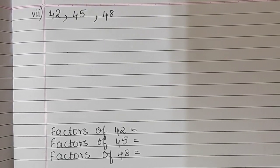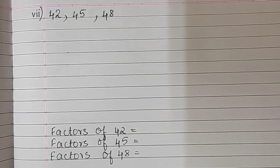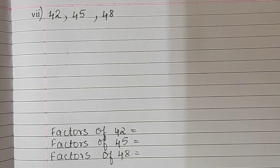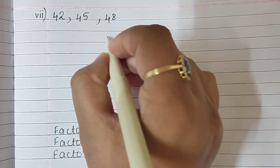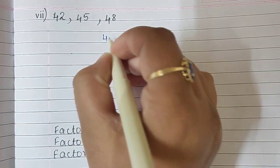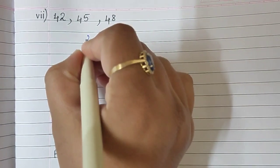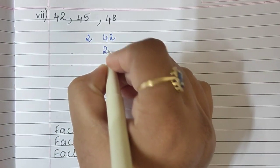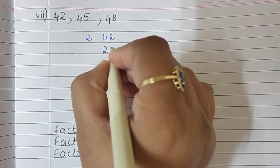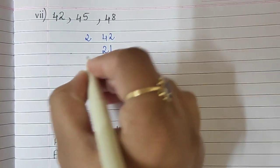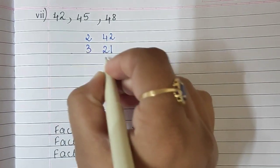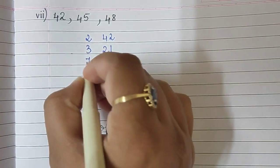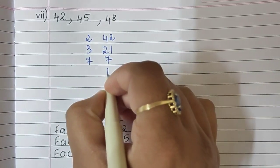Next is sum number 7. We will find the factors of 42, 45, and 48. So 42 is an even number, we begin with 2. 2 twenty-ones are 42. Now 21 is divisible by 3. So 3 sevens are 21, and 7 ones are 7.